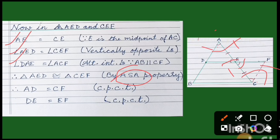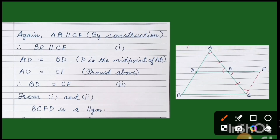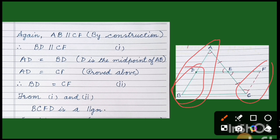Also by CPCT, DE is equal to EF — corresponding parts of congruent triangles. Additionally, AB is parallel to CF, as we have shown in our construction. Since AB is parallel to CF, we can say BD is parallel to CF.